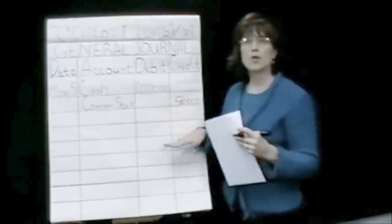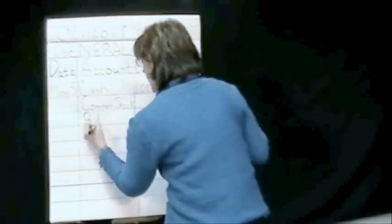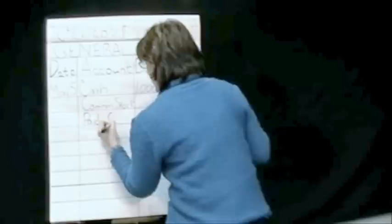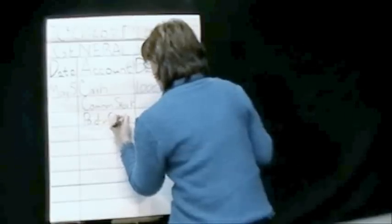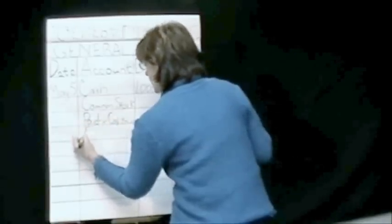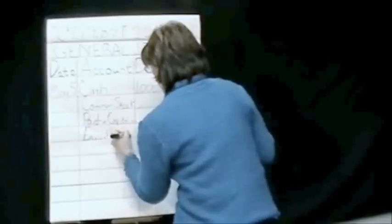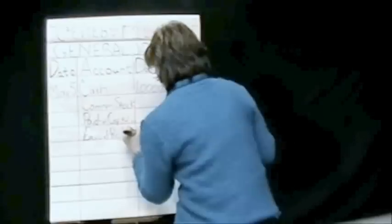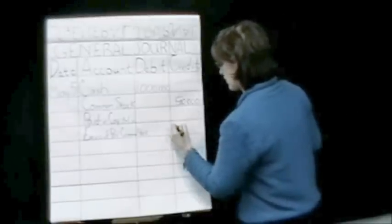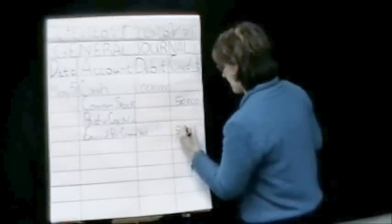It says here that this is common stock, so the full name of the account is paid-in capital in excess of par — common stock. That's a very long name, so I may use more than one line to write it. It is an equity account, it is increasing, and increases in equity are recorded by credits. The difference — $1,000,000 minus $500,000 — will give us $500,000 for that account.